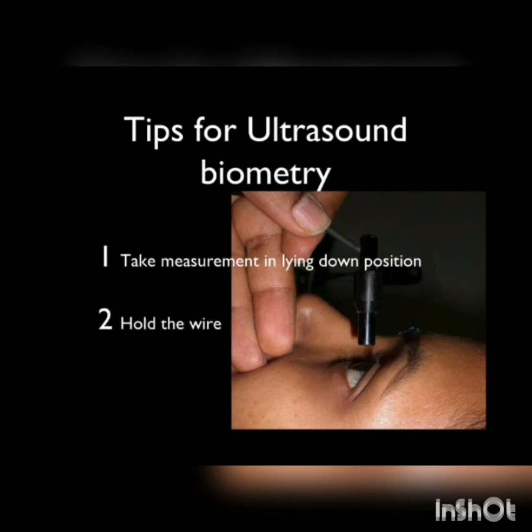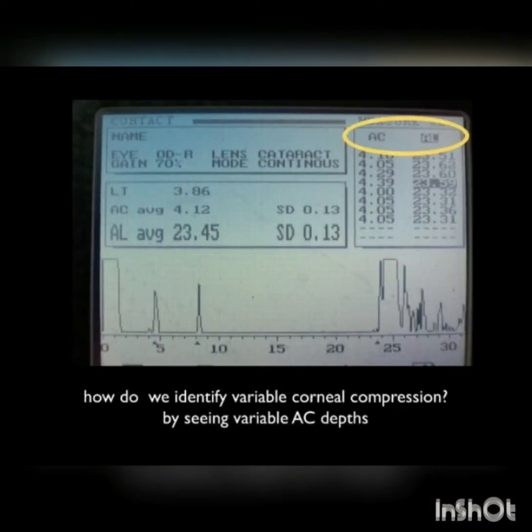This may be the most important part of today's talk. Please take your ultrasound biometry by making the patient lie flat and look up. You can use a wire speculum if needed to keep the eyes open, and hold the probe by the wire and not by the shaft. By taking these precautions, you will make the least amount of corneal indentation while taking the measurement.